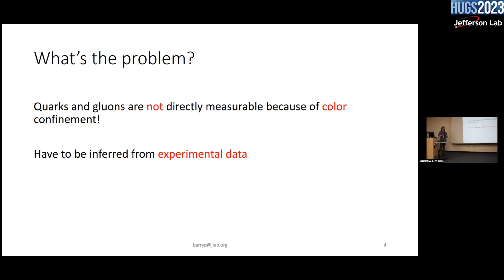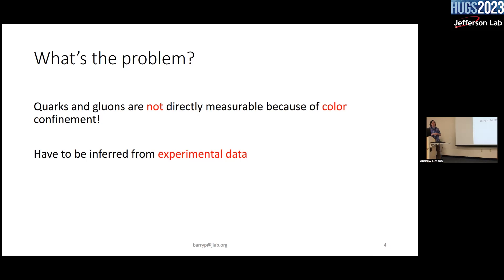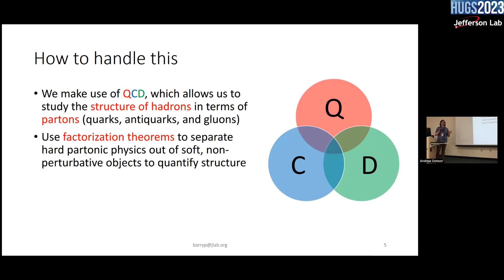We want to understand how that structure organizes itself inside a nucleon or other hadrons. The problem is that quarks and gluons are not directly measurable — we have color confinement, so it's impossible to see quarks and gluons singly in an experiment. You have to infer them from experimental data measuring hadrons and leptons, building up a theory to access quarks and gluons through QCD.